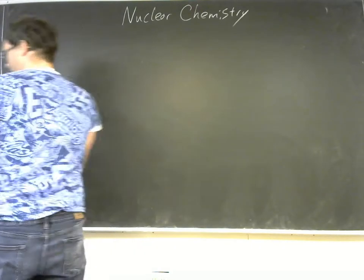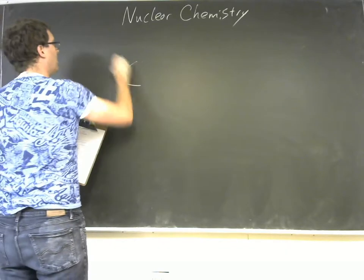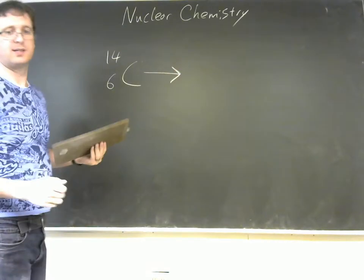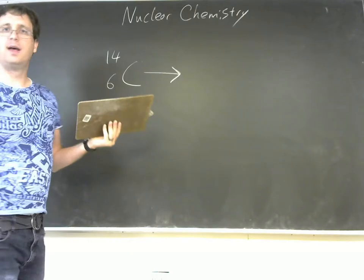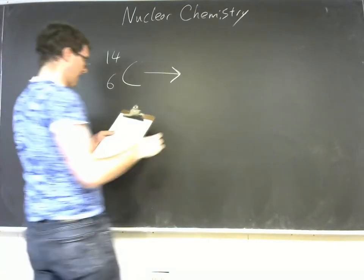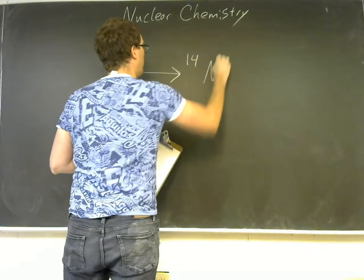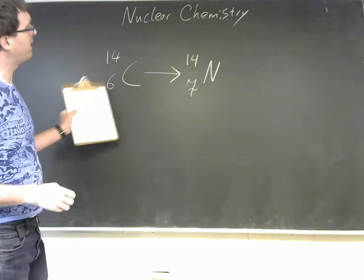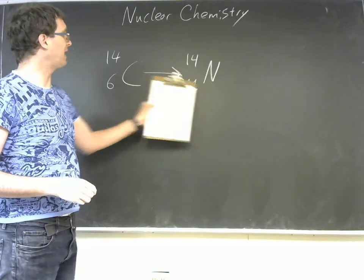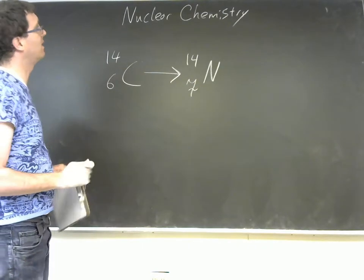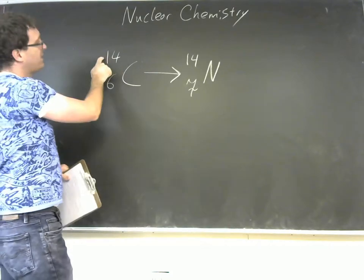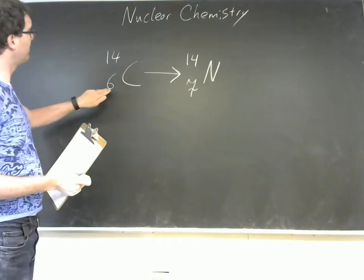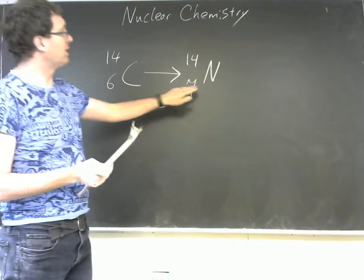So in a nuclear reaction, you'll have something like carbon-14. And carbon-14 is an isotope of carbon that will undergo a nuclear reaction to form nitrogen-14. Now nitrogen has seven protons. And so at this point, the reaction is unbalanced.